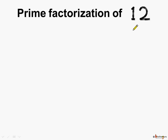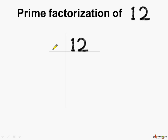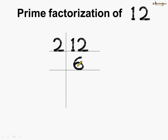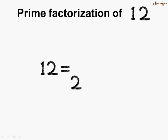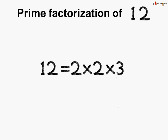Let us start with 12 first. 12 is an even number, so we can divide by 2, which is the least even prime number. So 2 times 6 equals 12. Now 6 is again an even number, so 2 times 3 equals 6. Here, 3 is a prime number and it is divisible by itself, so 3 times 1 equals 3. So here we did the prime factorization of 12. All the divisors are prime numbers, so the prime factorization of 12 is equal to 2 multiplied by 2 multiplied by 3.